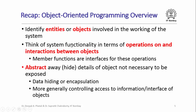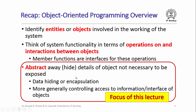Recall that in object oriented programming we first try to identify entities or objects involved in the working of the system we are trying to program. Then we think of system functionality in terms of operations on and interactions between these objects, and member functions are the interfaces for these operations. An important aspect we had seen but not studied in detail is abstracting away or hiding details of objects not necessary to be exposed. This is called data hiding or encapsulation, and it relates to controlling access to information and interfaces present in objects, and this is going to be the focus of this lecture.